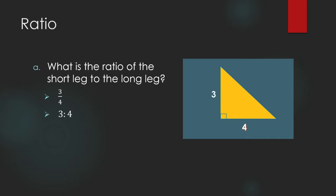We can also write it as: the ratio of the short leg to the long leg is 3 is to 4. Since we can write it as a fraction, we can also express it as a decimal or percent. The ratio is 0.75, because 3 over 4 in decimal form is 0.75, or 75% in percent form.